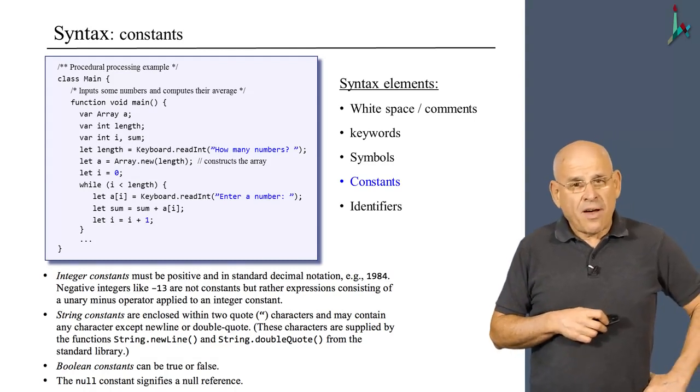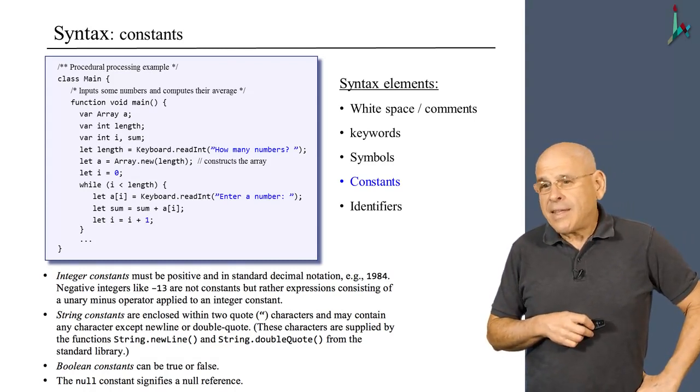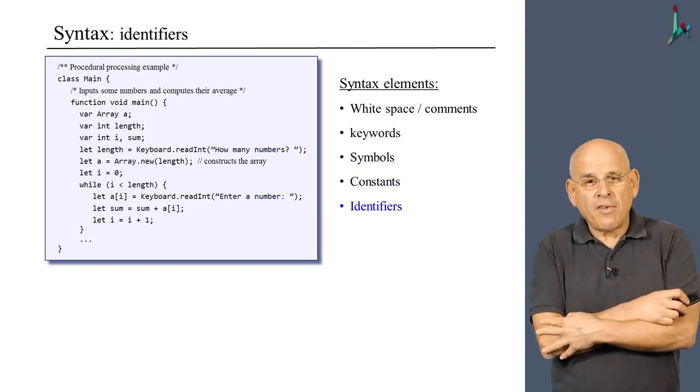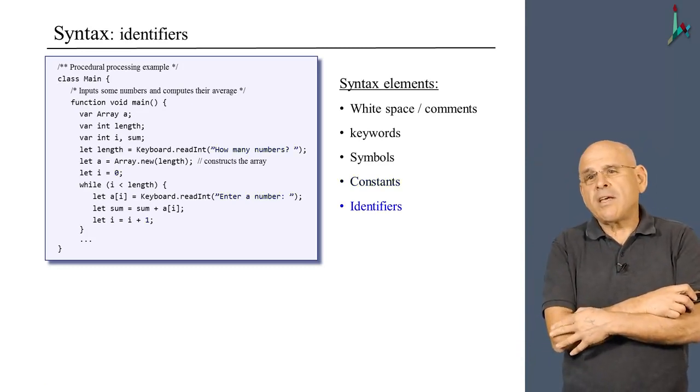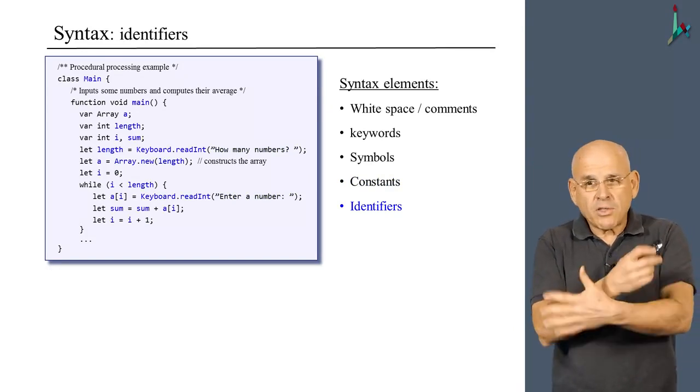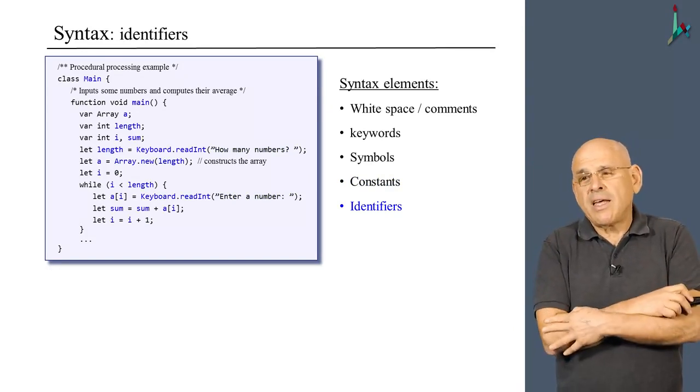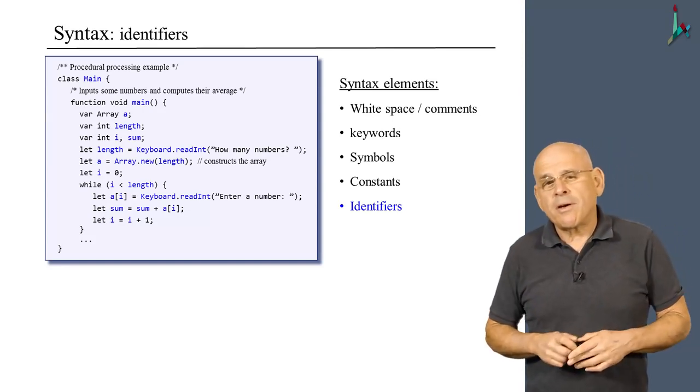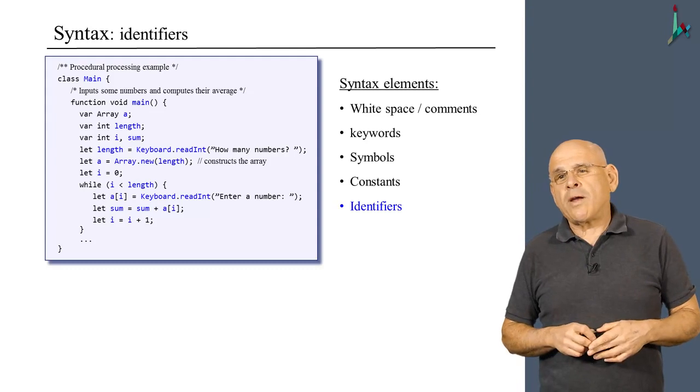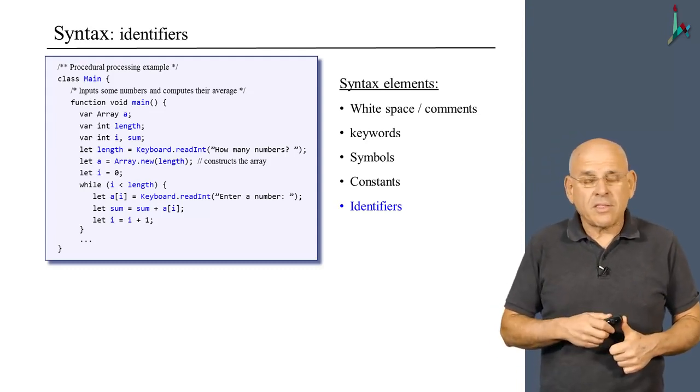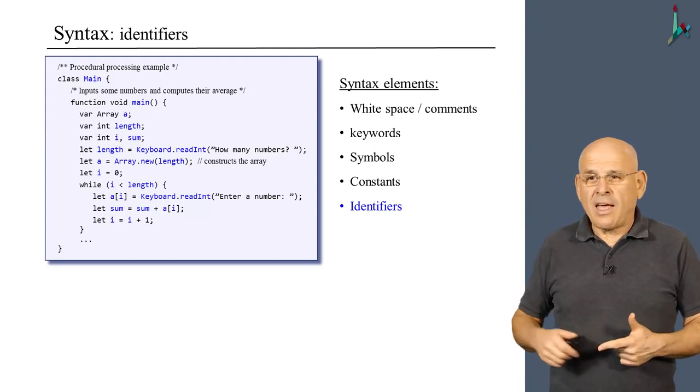Finally, we have identifiers. Identifiers are actually the bulk of any program that you see. In this example, as usual, most of the code is identifiers. The identifiers are the names that the programmer invents when he or she creates variables, classes, and methods.